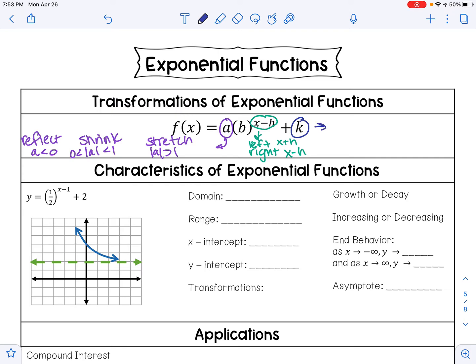Your 'k' value tells you how much you are going up or down. You will go up if you have a positive k value and you will go down if you have a negative k value.